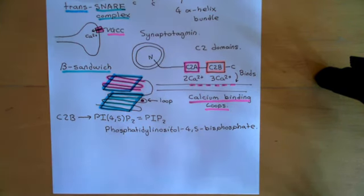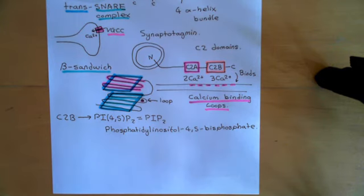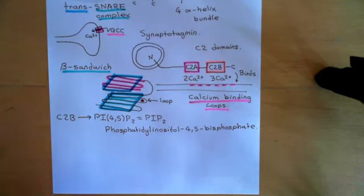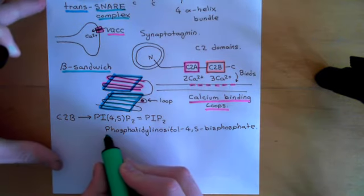PI(4,5)P2 is not found in the membrane of synaptic vesicles — which we'll come on to later, this is actually quite an important point, but it will become important later on. Phosphatidyl inositol 4,5-bisphosphate is a normal component of the phospholipid bilayer.